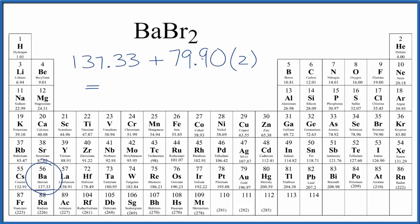When we do that, we multiply the 79.90 times two. We add it to the 137.33. We get 297.12,